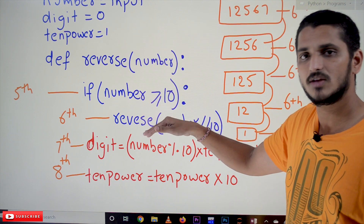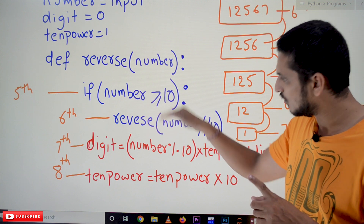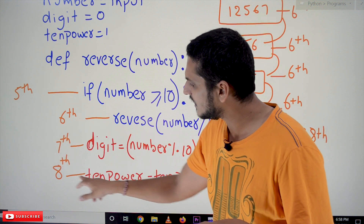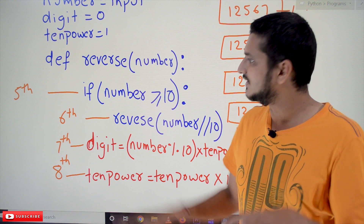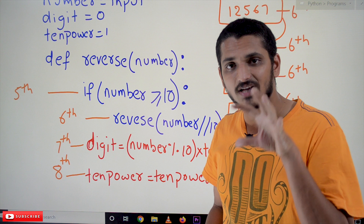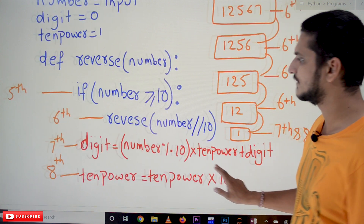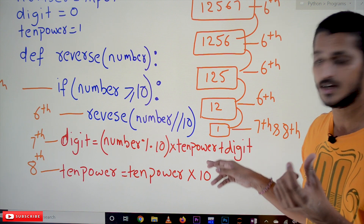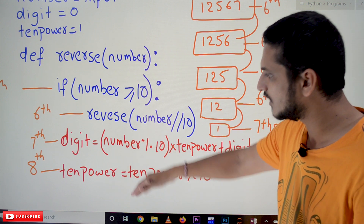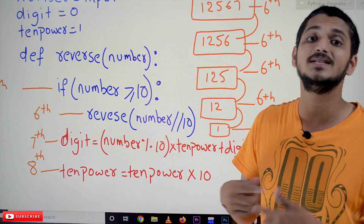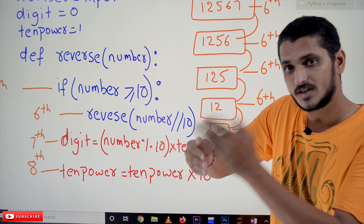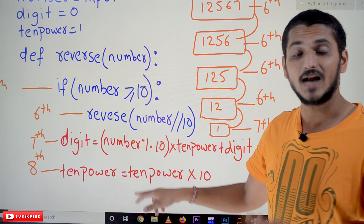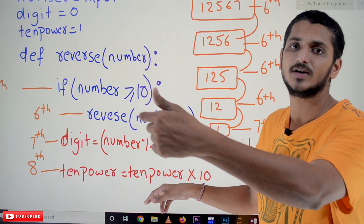Whenever the number is greater than or equal to 10, we go inside and call the function again. In our Python program, line 5 is the if condition, line 6 is the recursive call, line 7 is: digit = (number mod 10) * 10_power + digit, and line 8 is: 10_power = 10_power * 10. Each time we increase 10_power by a factor of 10 — for the 1's digit, 10's digit, 100's digit, 1000's, and 10000's place.